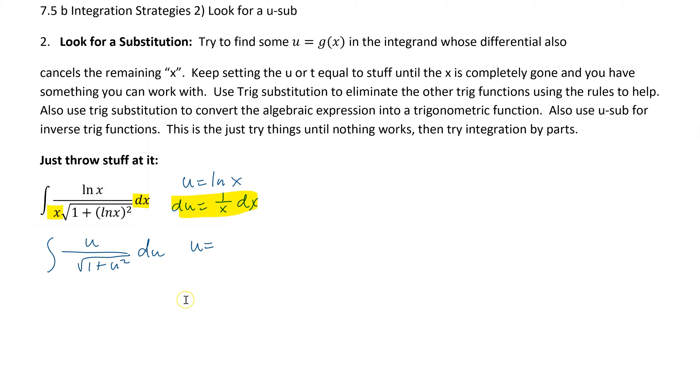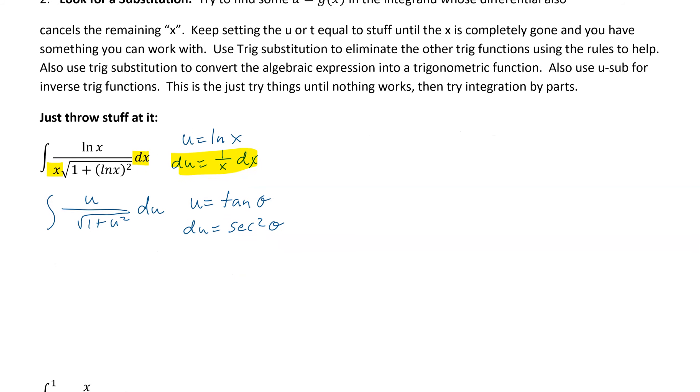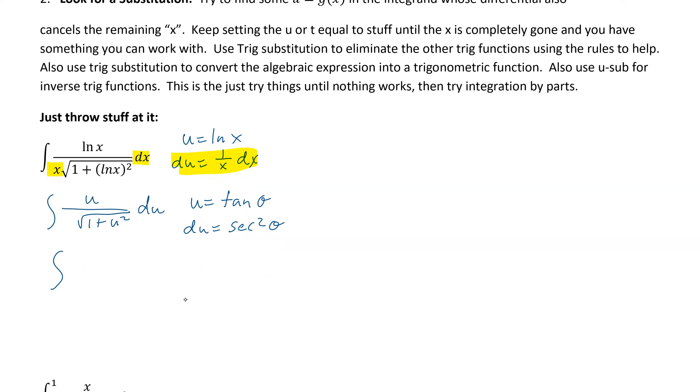So that right there needs to be a tangent theta squared. And so now I go du equals, and that would be secant squared theta. And then we do all of our substituting, again, making sure everything is gone. So my u is tangent theta. I'm going to get tangent squared theta, which I was looking at, looking for. And then the other part, I forgot the d theta here, is secant squared theta d theta.